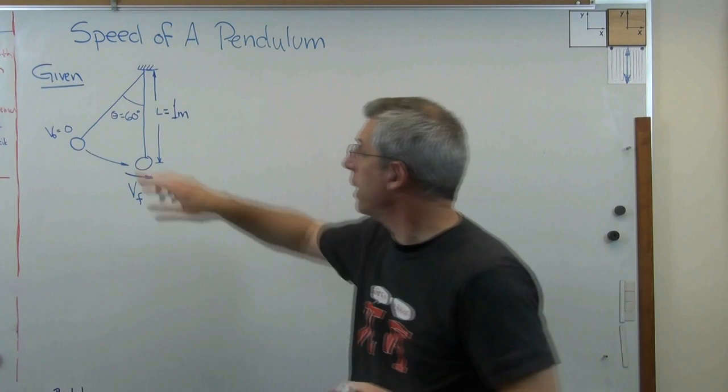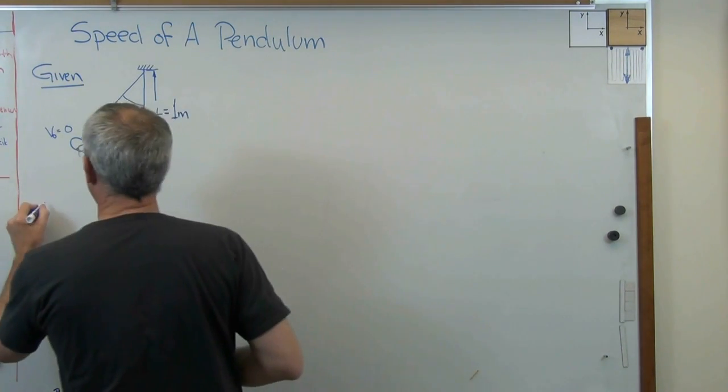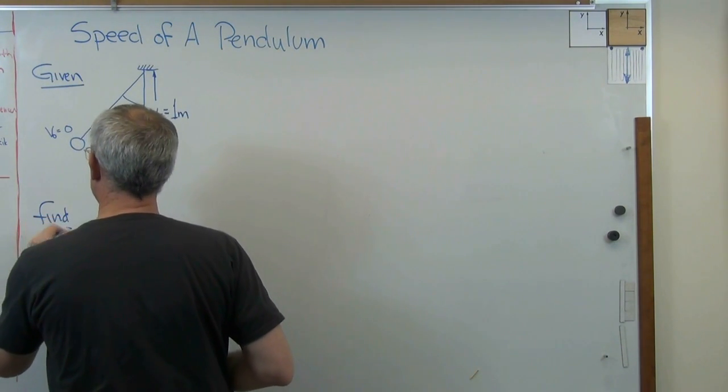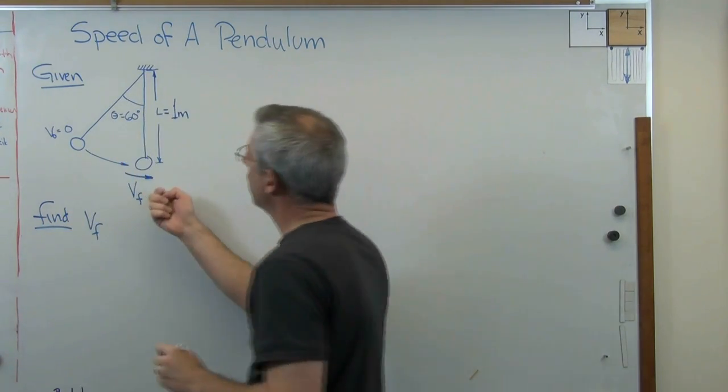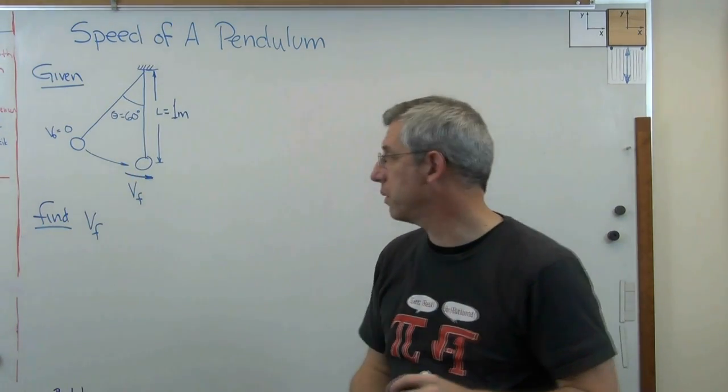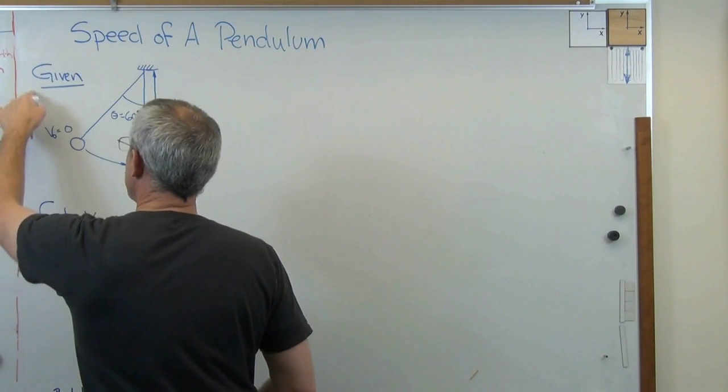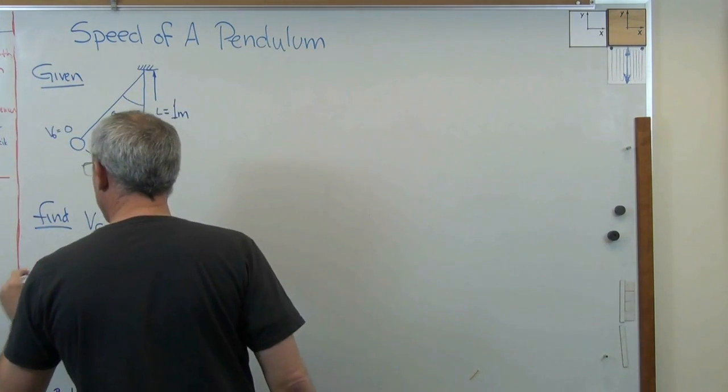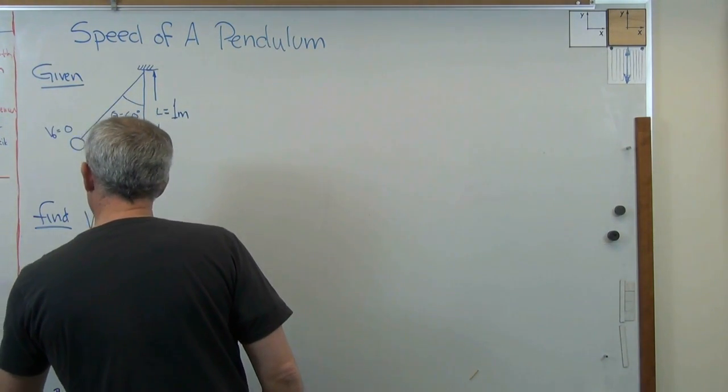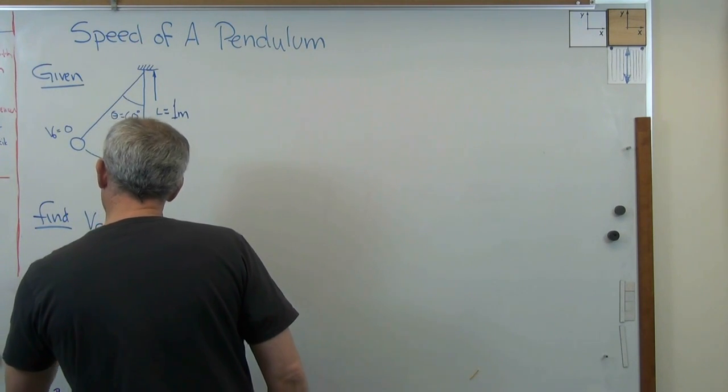We've got a given statement. Let's say find - we don't have really a problem unless there's something we're trying to find. So we're trying to find V final, the velocity as the bob goes through the vertical. And since we're going to use G, F, S and then A for our format, we'll put solution here.